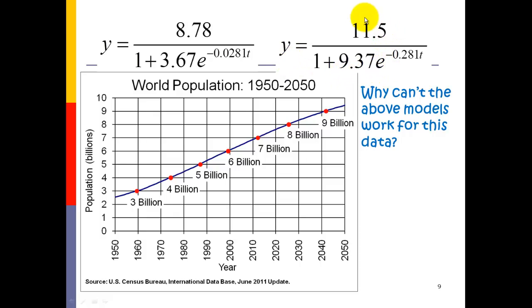Our second function has 11.5 as a leveling-off value, but something else is wrong: the initial value. When we plug in zero for T, e to the zero is 1, so in the denominator we end up with 10.37 from those two numbers added together. That gives us 11.5 divided by 10.37, which is about 1.1. But at time zero — since zero is 1950 — our graph is clearly above two, somewhere around 2.5. This model gives 1.1 for the initial value, so the second one cannot work either.